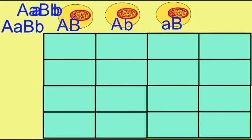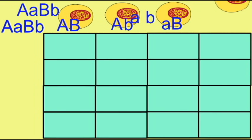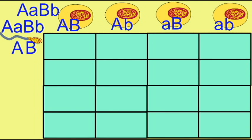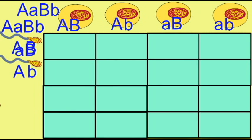A quarter of the gametes are dominant for the first gene and recessive for the second. A quarter of the gametes are recessive for the first gene and dominant for the second. And a quarter of the gametes produced will have the recessive alleles for each of these two genes.